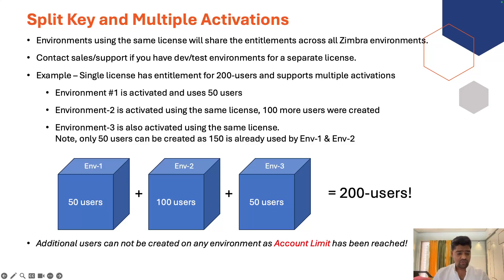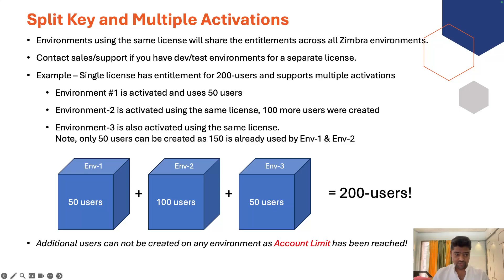We are allowing them to use the same license on multiple production servers, but if you use the same license on multiple environments, the usage limit of that particular license will be calculated across all environments. For example, if you have three production environments — environment one with 50 users, environment two with 100 users, environment three with 50 users — the total is 200 users, calculated across environments. Additional users cannot be created on any environment if your account limit has been reached; this applies for all environments.